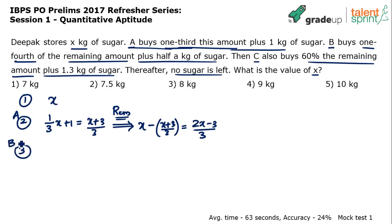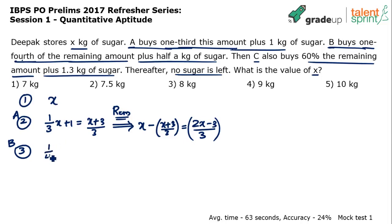Now in step three, B comes into picture. The remaining amount at this point is (2x − 3)/3. B has bought one-fourth of this remaining amount plus half a kg of sugar.